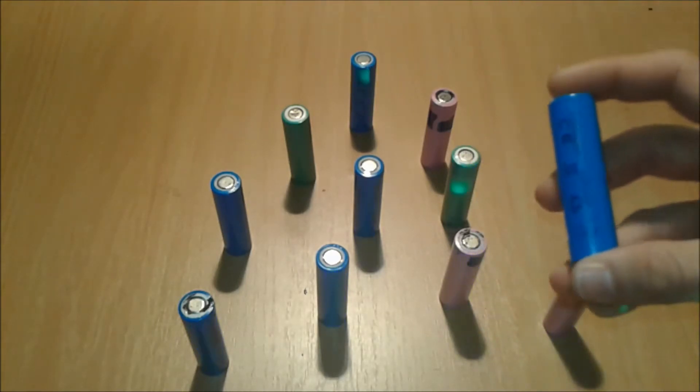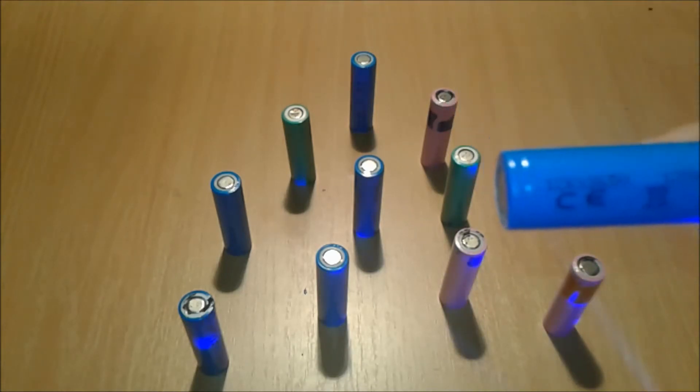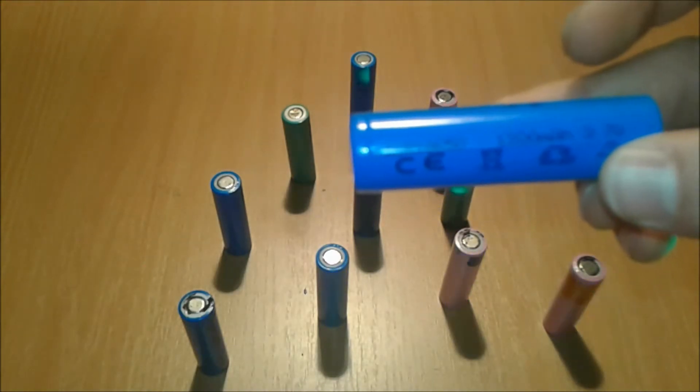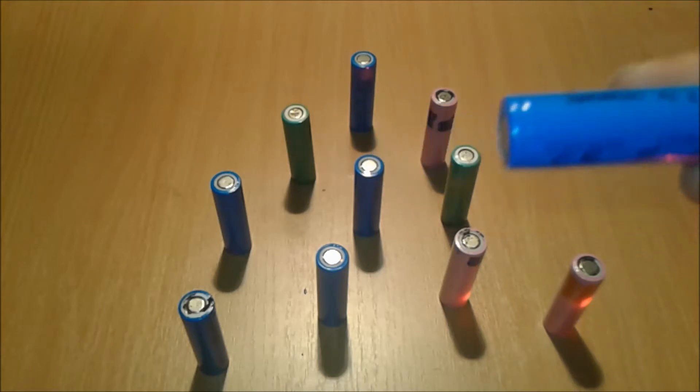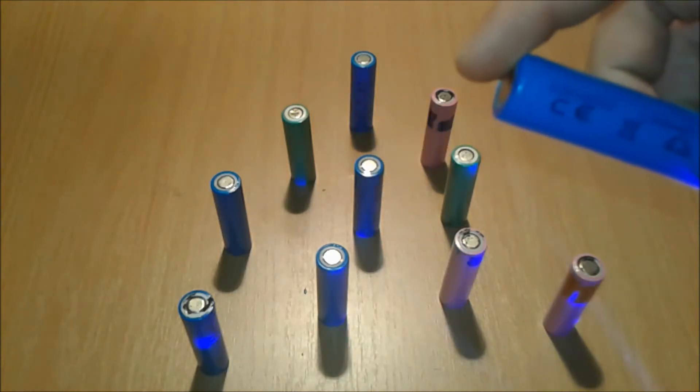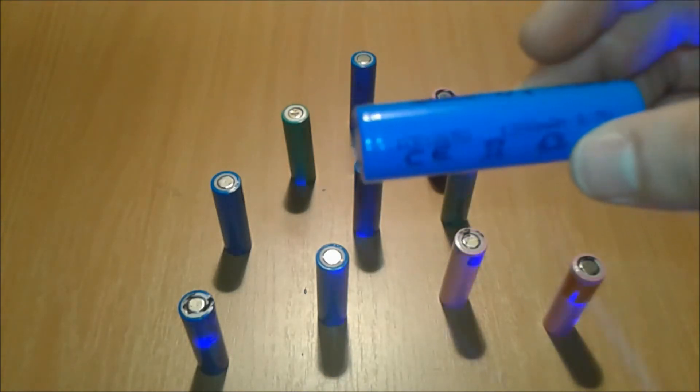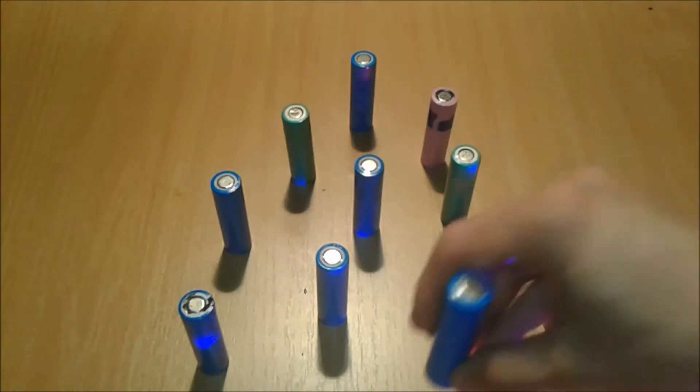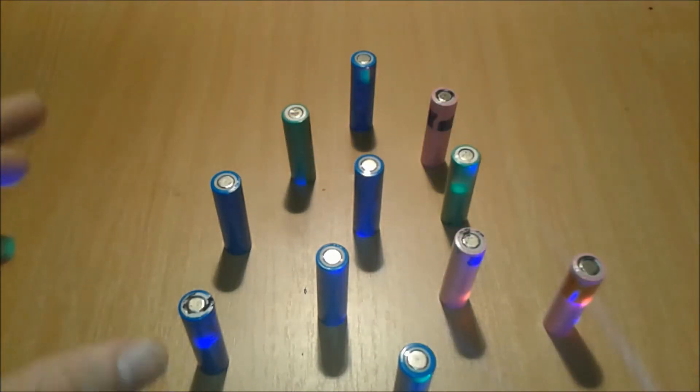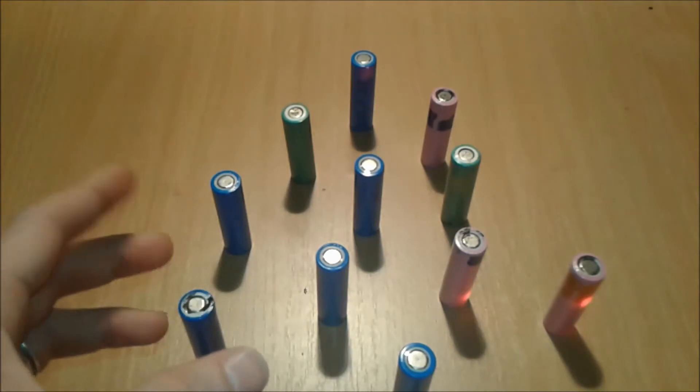They can be bigger or smaller. These are 18650 rated at 1200 milliamp hours, 3.7 volts. With this type of battery, if you treat them right and charge them right, you can do a lot.